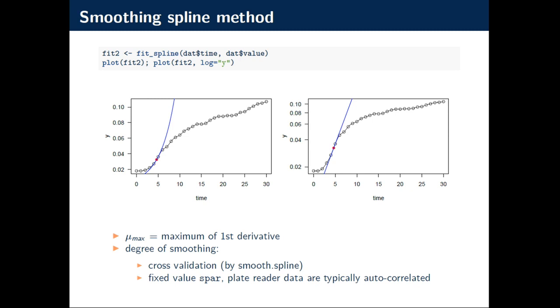Another method is smoothing splines. The good thing is that you get immediately the first derivative as the maximum growth rate. The disadvantage is that it's difficult to get the maximum and also that you have to think about the degree of smoothing because the data, especially in these multiwell experiments, are autocorrelated. The cross-validation does not work. So it can also be set manually. But if you have an idea how to make this better, it's highly welcome.